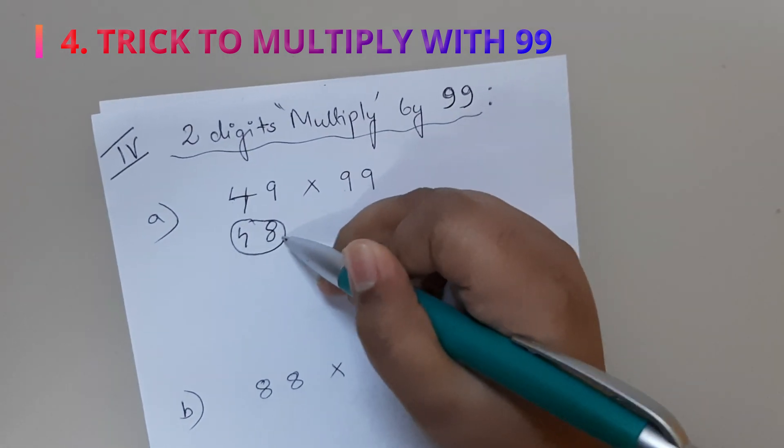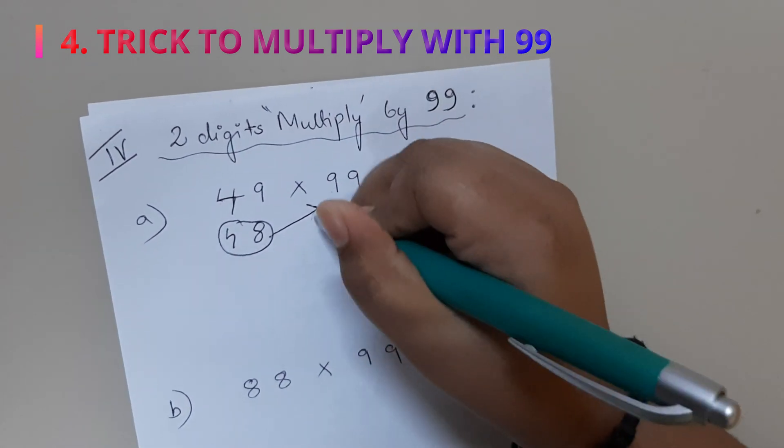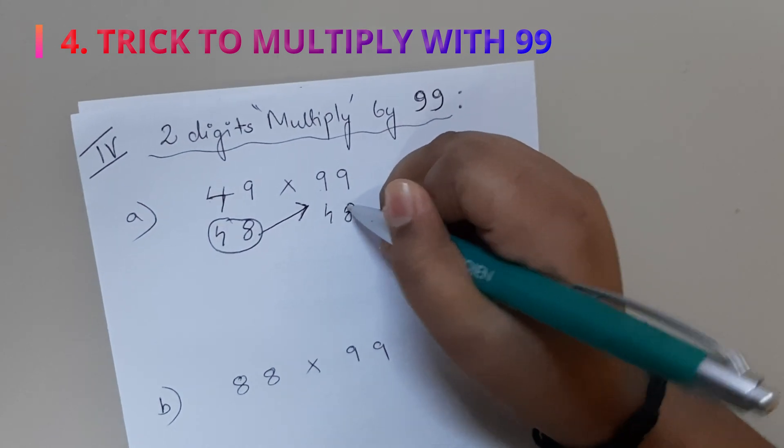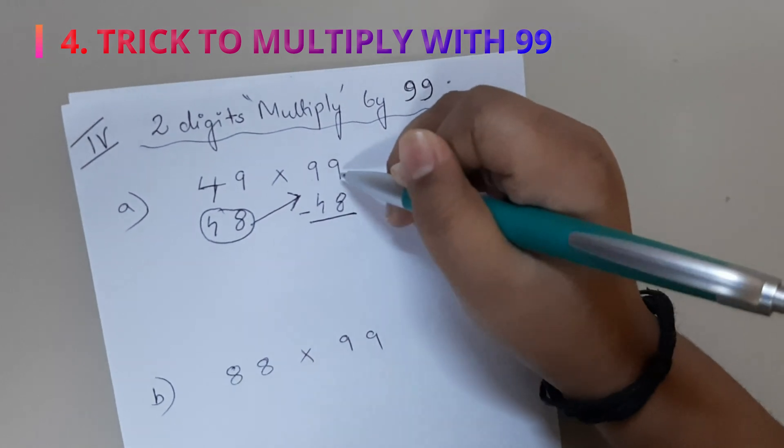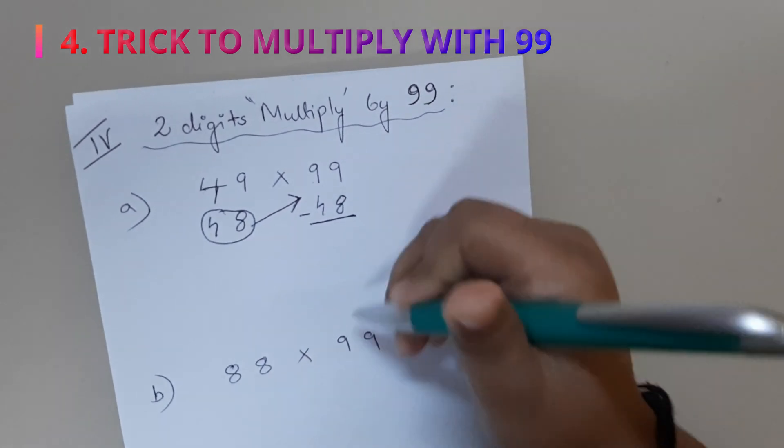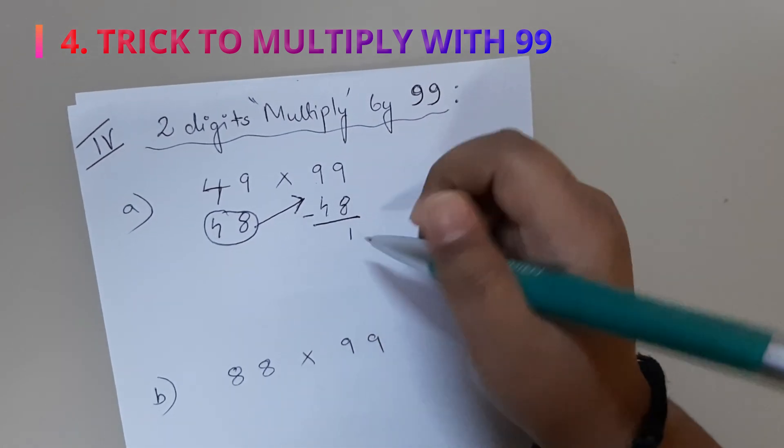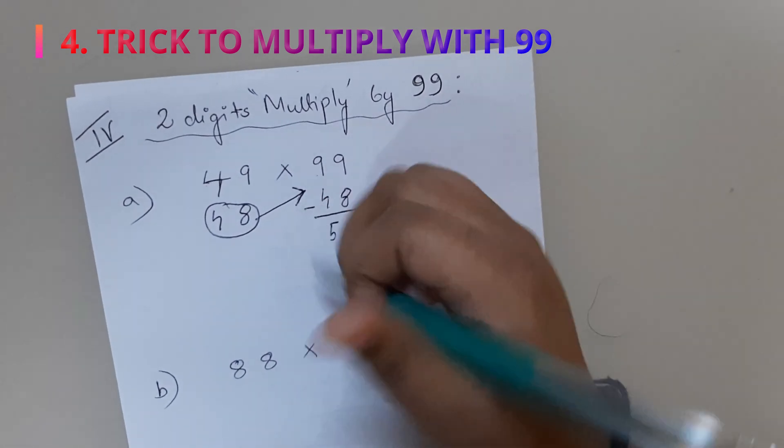Subtract by 9. So 9 minus 8 is 1, 9 minus 4 is 5. After that you have to write the same number over here.